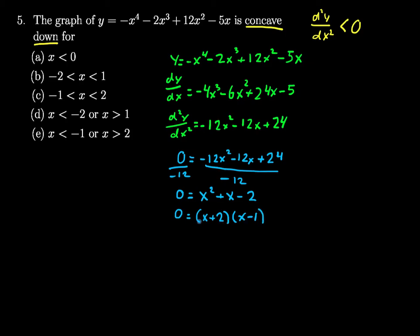You can see that x squared minus x plus 2x gives me this plus x right here. 2 times negative 1 is negative 2. And so I know that d squared y dx squared is equal to 0 when x is negative 2. By the zero product property, x plus 2 equals 0 when x is negative 2 or 1.